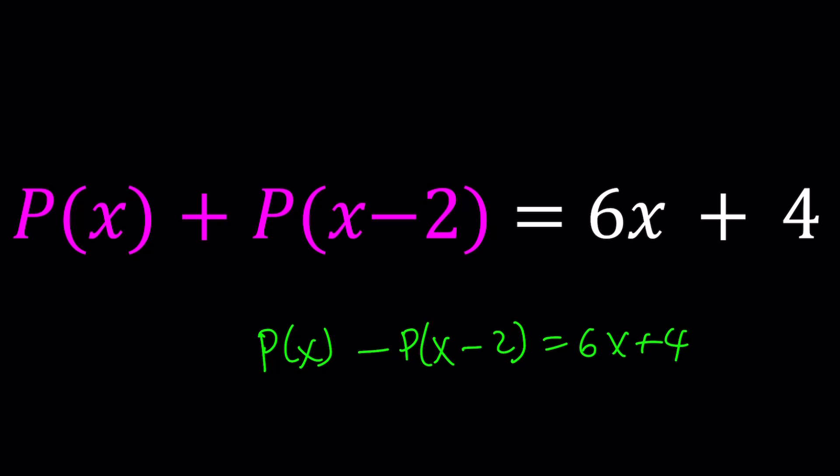That would be a good question. But in this case, since they are being added, the x term, whatever the power is, the degree is, is going to be raised to the same power, so they're not going to cancel out. Therefore, I conclude, I hereby conclude, that P(x) must be a linear polynomial.